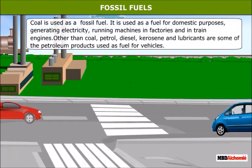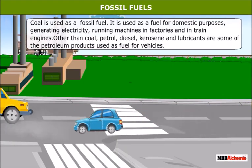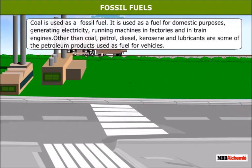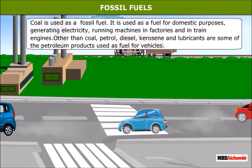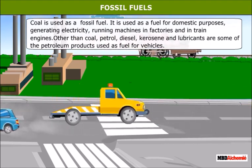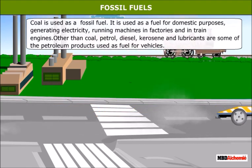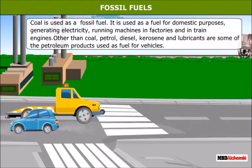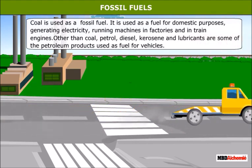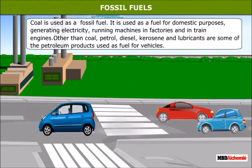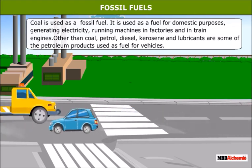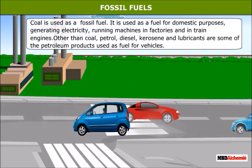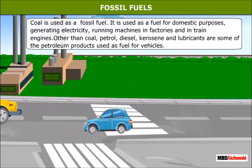Fossil fuels: coal is used as a fuel for domestic purposes, generating electricity, running machines in factories, and in train engines. Petrol, diesel, kerosene, and lubricants are some of the petroleum products used as fuel for vehicles.